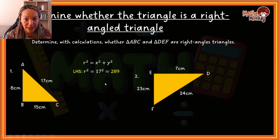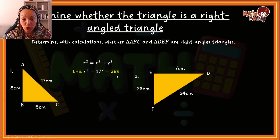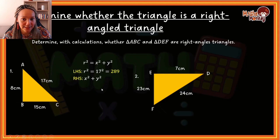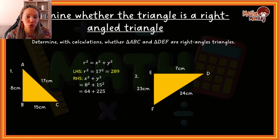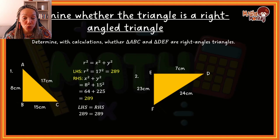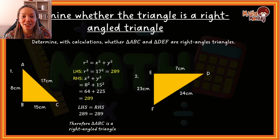Let's start with the left hand side: r squared equals the longest side, which is 17 squared, and that equals 289. Now the right hand side: x squared plus y squared equals 8 squared plus 15 squared, which is 64 plus 225, and that also gives 289. The left hand side equals the right hand side, so r squared equals x squared plus y squared — therefore triangle ABC is a right angled triangle.